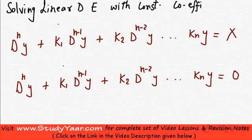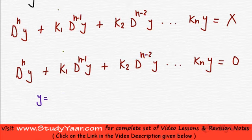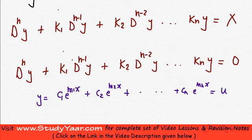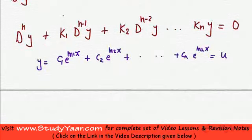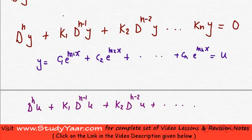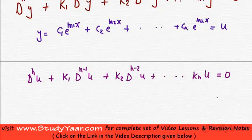We know how to solve this guy. The solution is y equal to c1 e raised to power m1x plus c2 e raised to power m2x and so on up until cn e raised to power mnx. Let us call this as u. So y equal to u is a solution of this guy, and therefore u must satisfy this equation. What we have is: D raised to power n of u plus k1 D raised to power n minus 1 of u plus k2 D raised to power n minus 2 of u, and so on up until kn·u, equal to 0. This is equation one.